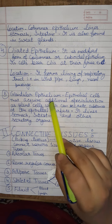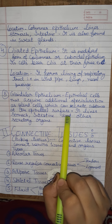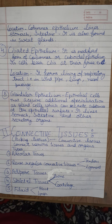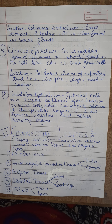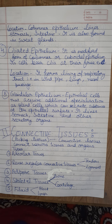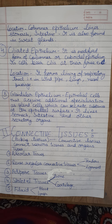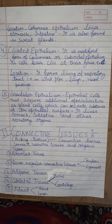Next is glandular epithelium. Epithelial cells that acquire additional specialization as gland cells can secrete substances at the epithelial surface. It lines the stomach, intestine, and other secretory organs. For example, the stomach secretes digestive juices and the small intestine also secretes juices. To summarize, epithelium is of five types: squamous, cuboidal, columnar, ciliated, and glandular epithelium.